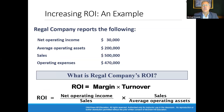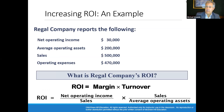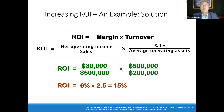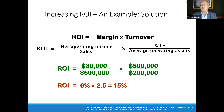Here's an example. Regal Company reports net operating income of $30,000, average operating assets of $200,000, sales of $500,000, and operating expenses of $470,000. What is Regal Company's return on investment? Net operating income is $500,000 minus $470,000 equals $30,000. Divided by average operating assets of $200,000, the return on investment is 15%.